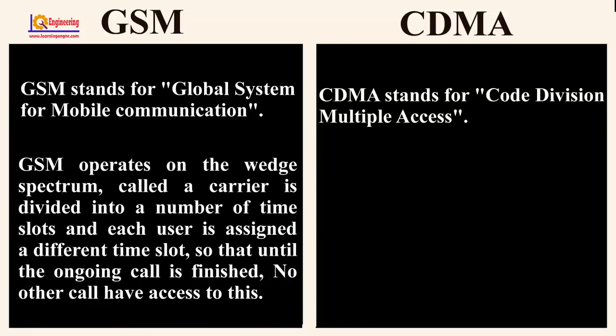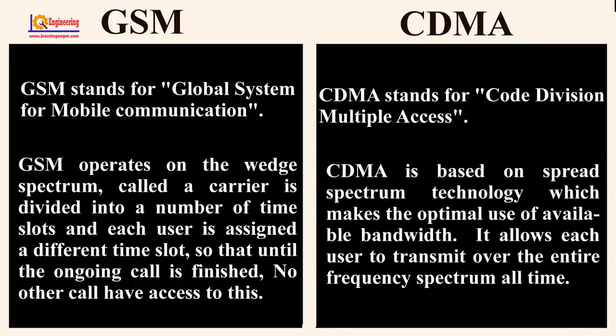GSM operates on a spectrum where a carrier is divided into a number of time slots, and each user is assigned a different time slot, so that until one ongoing call is finished, no other call has access to it. CDMA is based on spread spectrum technology, which makes optimal use of available bandwidth. It allows each user to transmit over the entire frequency spectrum at all times.